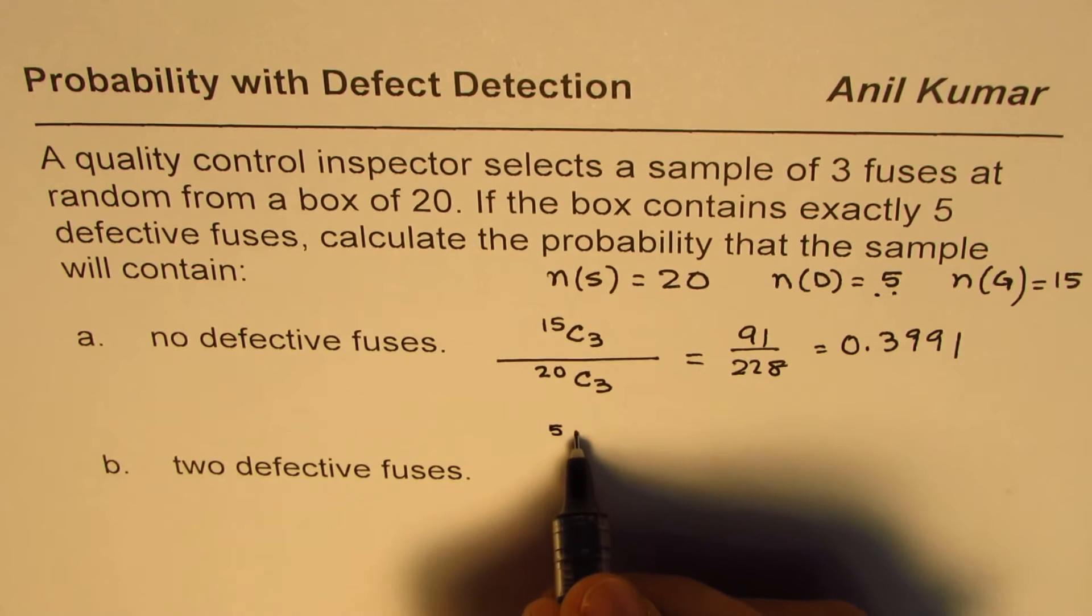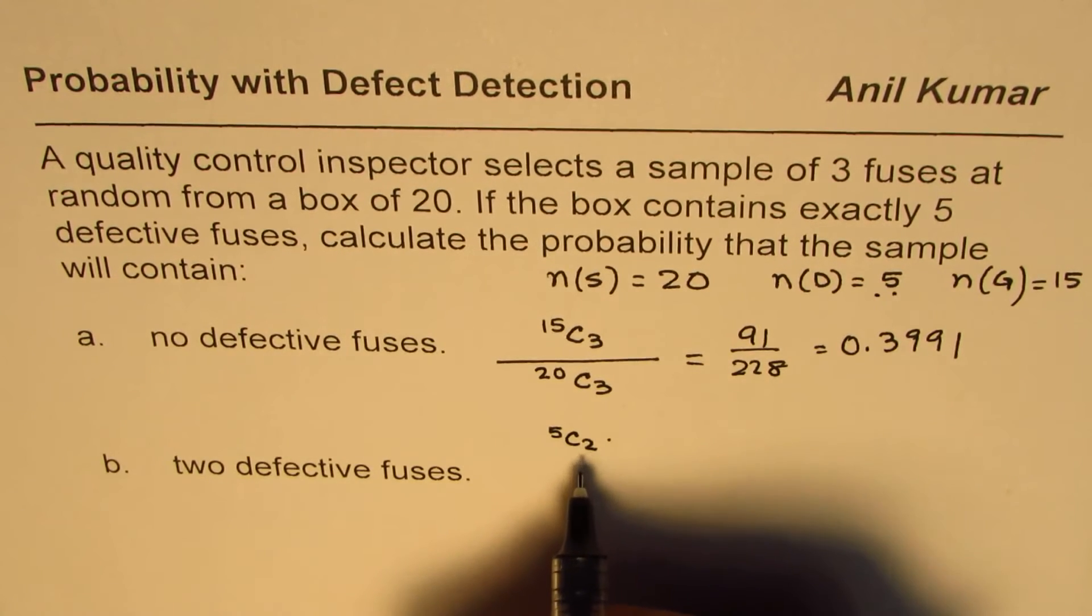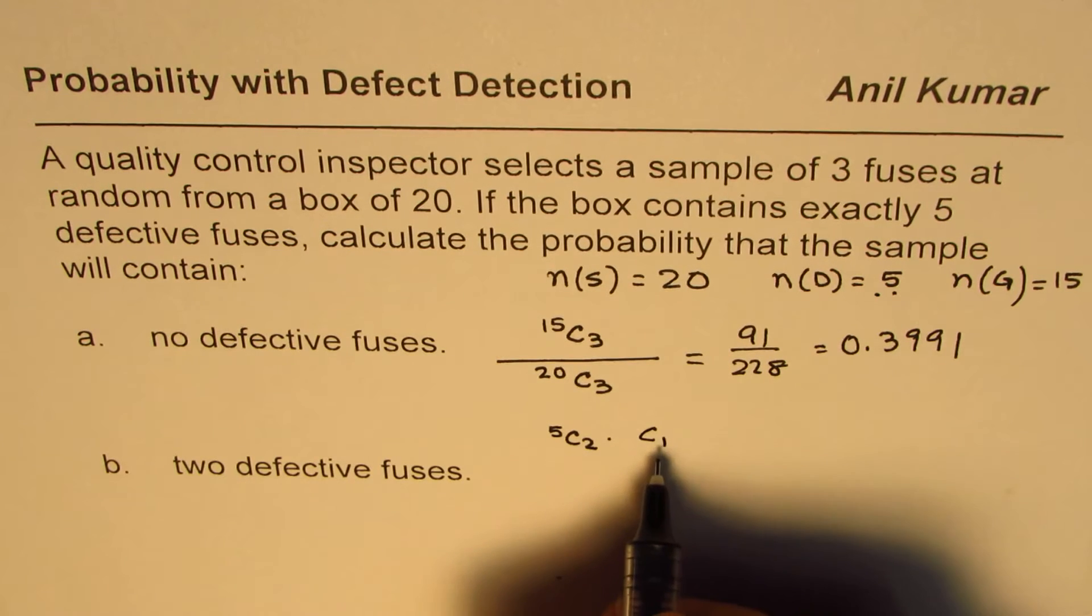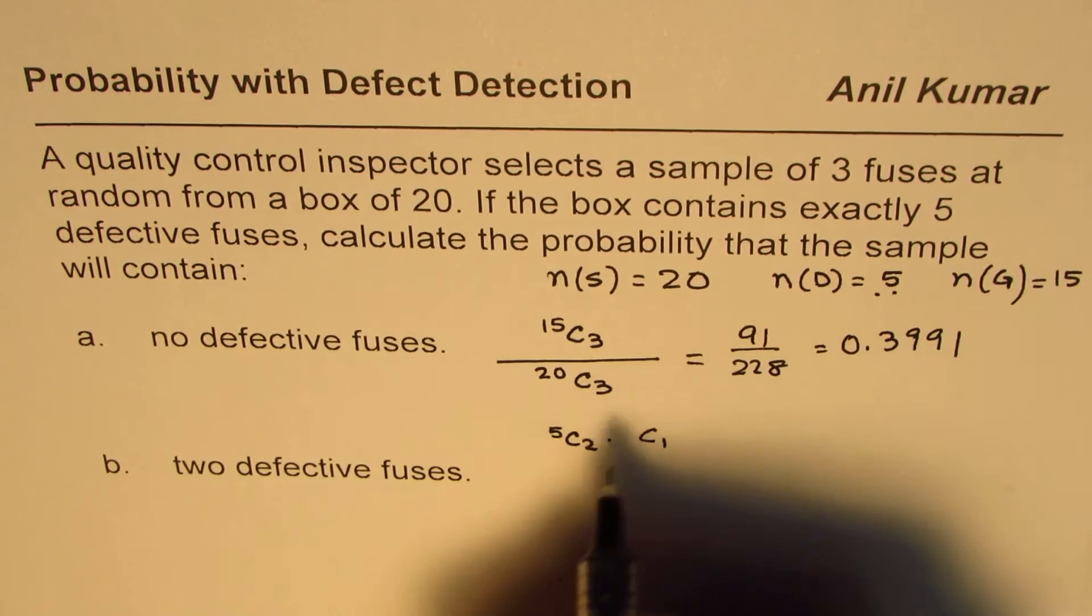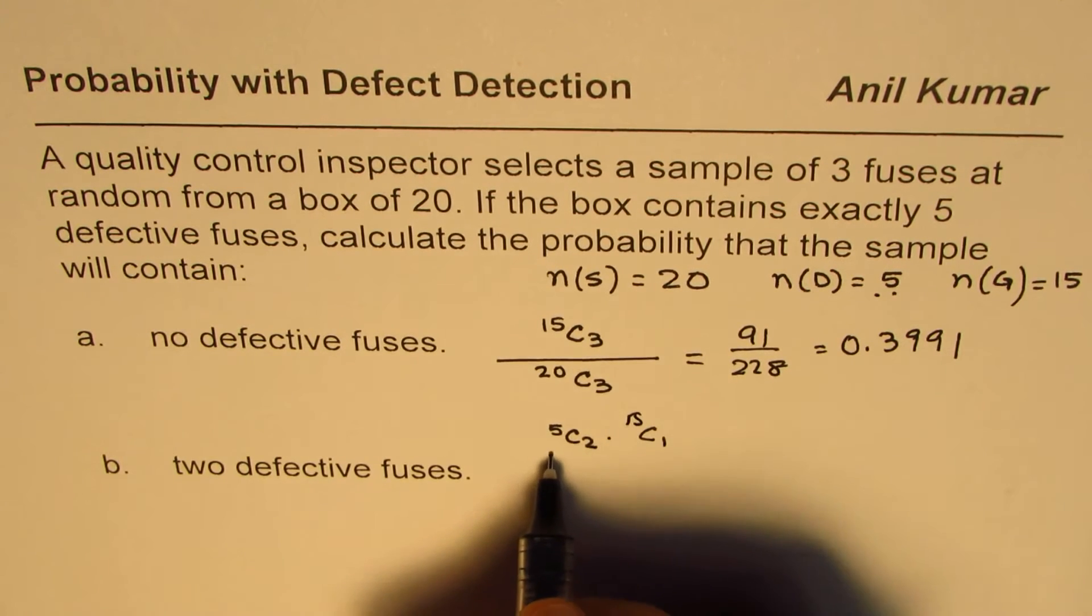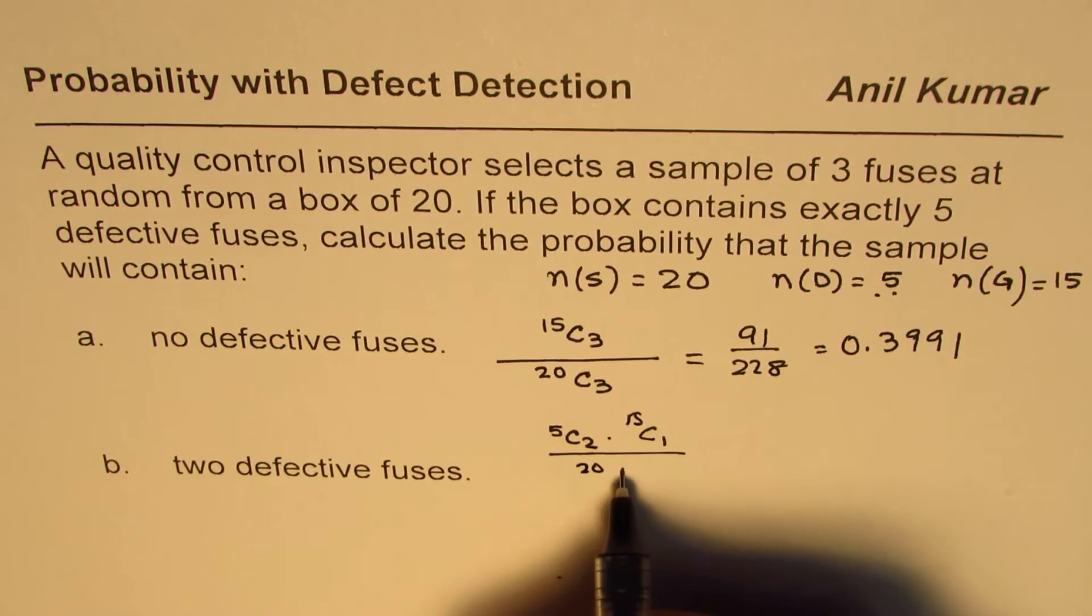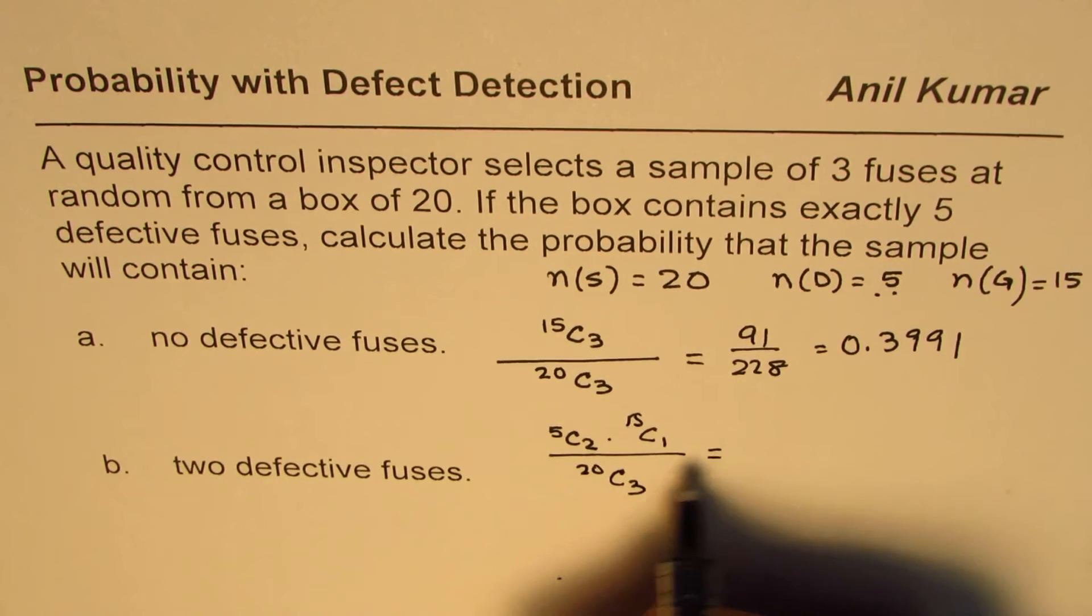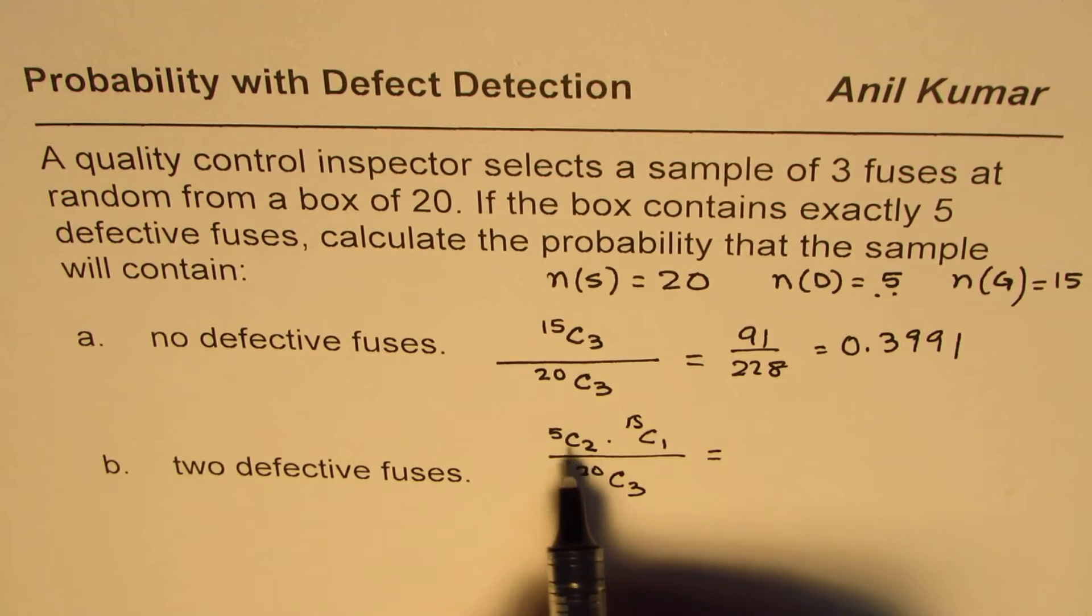So it will be five choose two defective pieces. We have selected two. We are left with one more. So we have to select one more. And this one is a good piece. So it comes from the group of 15. And still the total number in a sample space remains same, which is 20C3. So that is how we'll choose. We'll choose two from defective, one from good to make it all three.